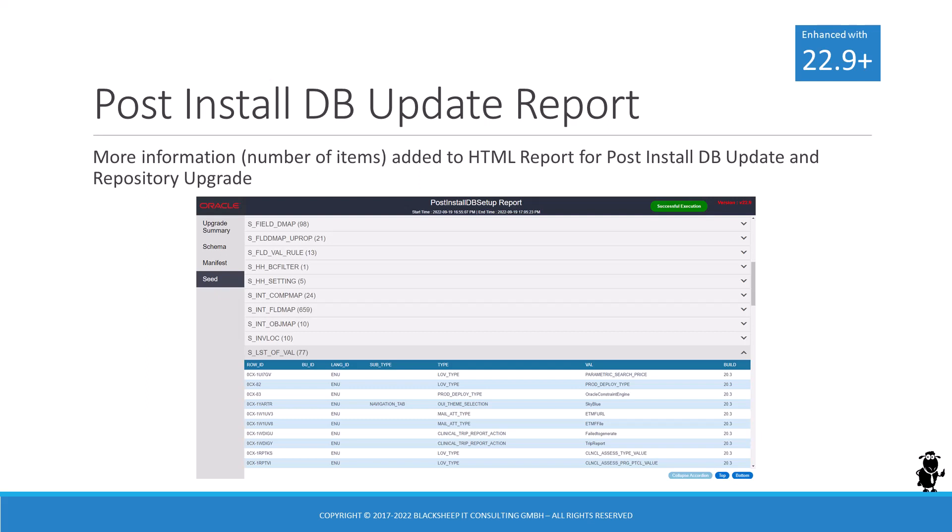Administrators tasked with running and monitoring the update process will be pleased to find that the HTML report generated by the Post-Install Database Update utility has been improved. The individual sections now include the number of items, allowing the reader to get a good overview of the affected areas. The same improvements are also available for the HTML report produced by the Repository Upgrade utility.